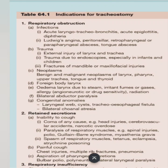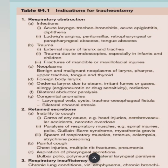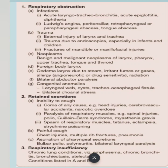The first indication is respiratory obstruction. In cases of infection, this includes acute laryngotracheobronchitis, acute epiglottitis, diphtheria, Ludwig's angina, peritonsillar, retropharyngeal, parapharyngeal abscess, or tongue abscess. Due to trauma: external injury of larynx and trachea, trauma from endoscopy especially in infants and children, and fractures of the mandible or maxillofacial injuries. Neoplasms causing respiratory obstruction include benign and malignant neoplasms of the larynx, pharynx, upper trachea, tongue, and thyroid.